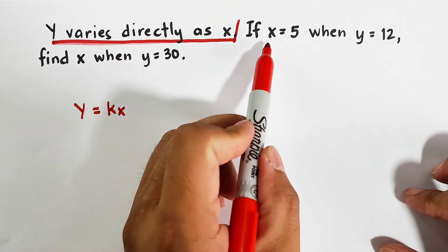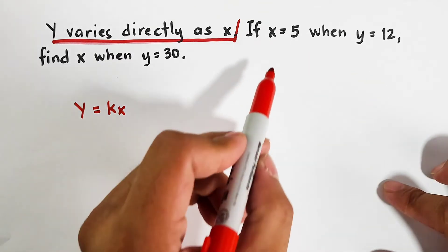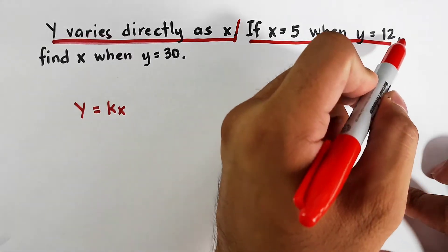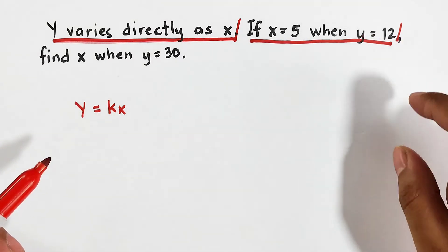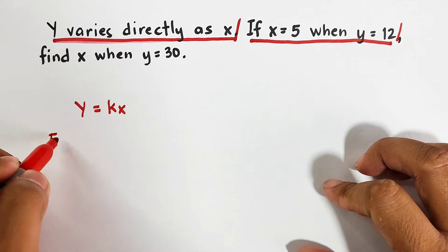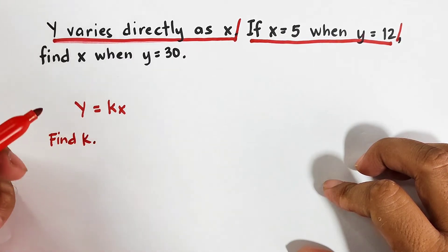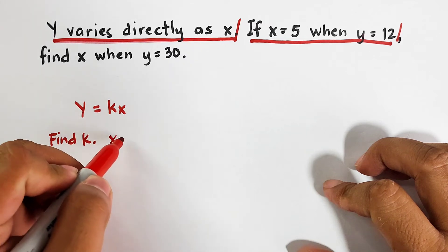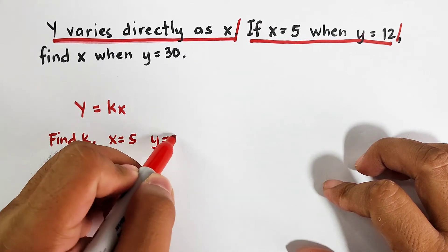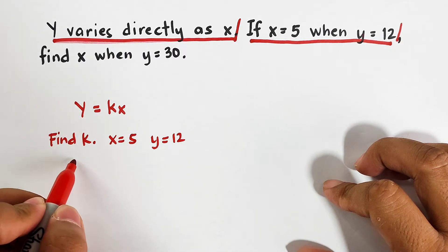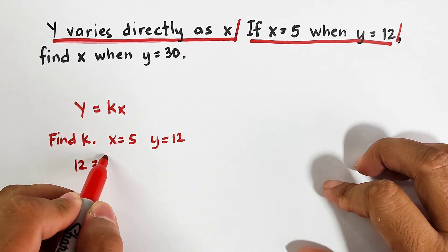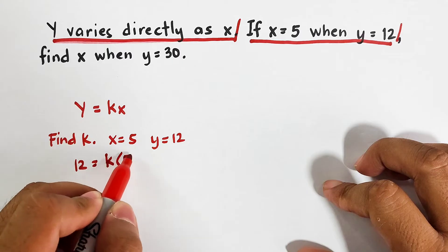And next, we have if x is equal to 5 when y is equal to 12. The purpose of this part is to find the constant, or the k, of the given variation. As you can see, we have the value of x and the value of y. To find k, let's put here, find k. We will write here, x is equal to 5, and your y is equal to 12. To find k, we will substitute this 5 and 12 here, so it will become 12 is equal to k times 5.